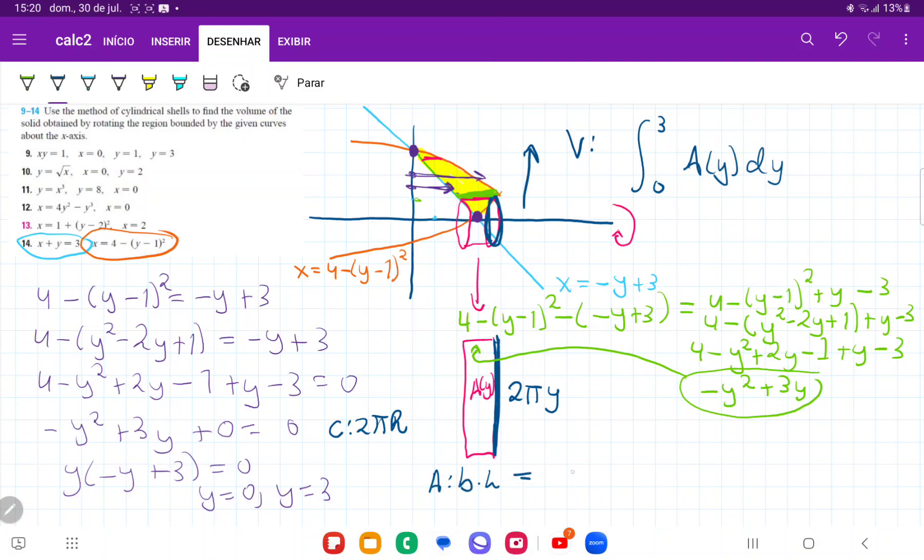Therefore, our area is going to be base times height, so let me put the 2πy out in front first. So that's 2πy times minus y squared plus 3y.